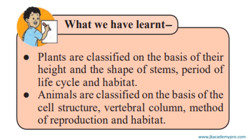We can also classify animals on the basis of their cell structure — that is, whether they are unicellular or multicellular — and the vertebral column, whether they have one. If they have a vertebral column they are called vertebrates; if not, they are called invertebrates. Then there is the method of reproduction: if they lay eggs they are oviparous, and if they give birth to young ones they are viviparous. As well as habitat: if they live on land they are terrestrial, in water they are aquatic, both on land and water they are amphibians, and birds that fly in the air have an aerial mode of life.